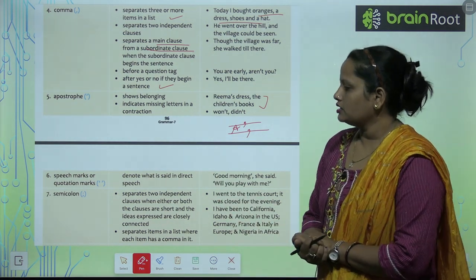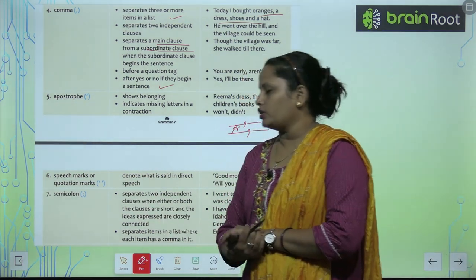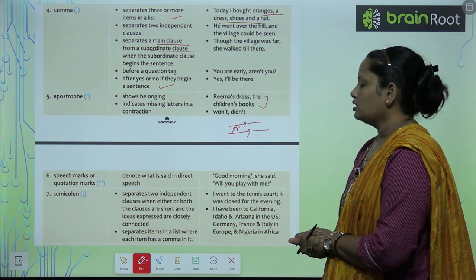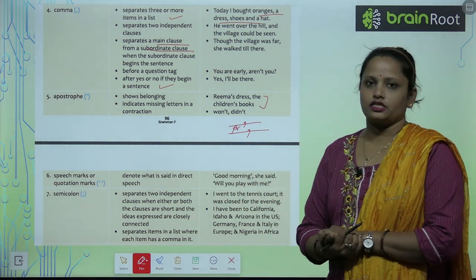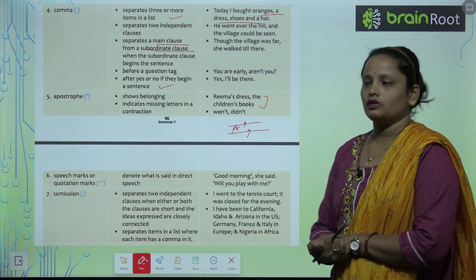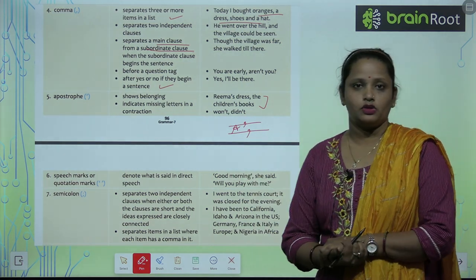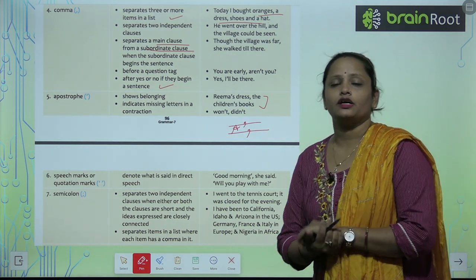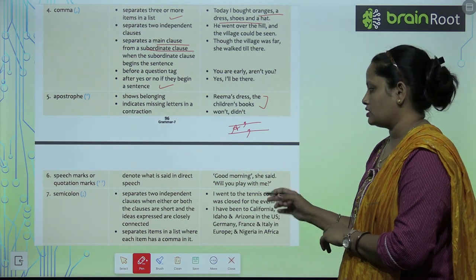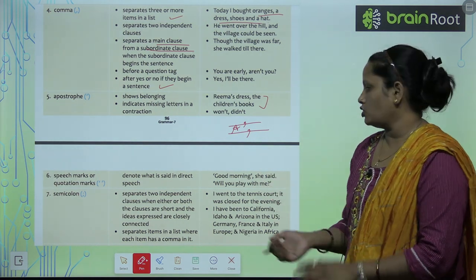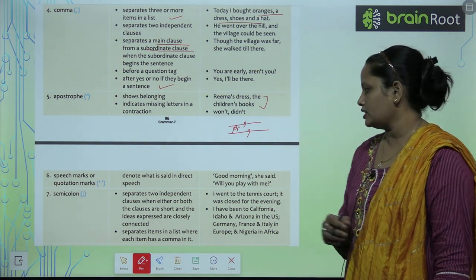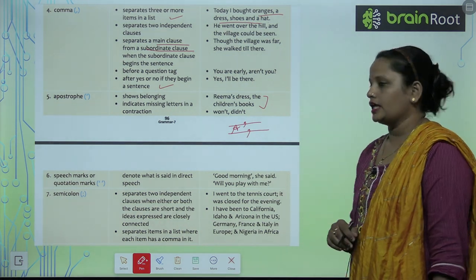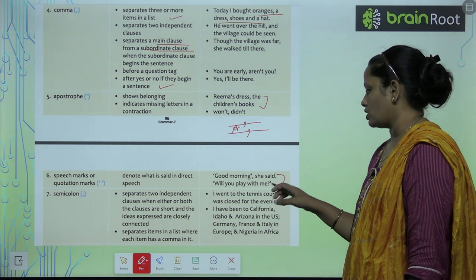Next is speech mark or quotation mark. They denote what is said in direct speech — toh ye tab hum use karte hain jab koi bhi chiz direct speech mein boli hai, means koi bhi chiz ko directly aap kisi ko convey kar raha hai. That is called direct speech. Example: 'Good morning,' she said, 'will you play with me?' — yahan direct speech ka usage ho raha hai.